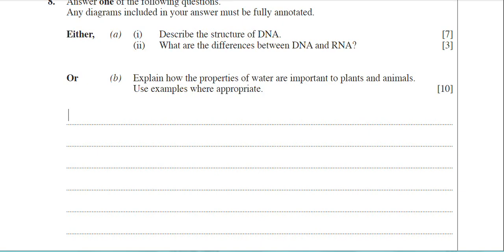Okay then, we're looking at question 8 now, part B, from the January 2009 BY-1 paper. This question is on water, and this is 10 marks again. You're asked to explain how the properties of water are important to plants and animals. Use examples where appropriate.